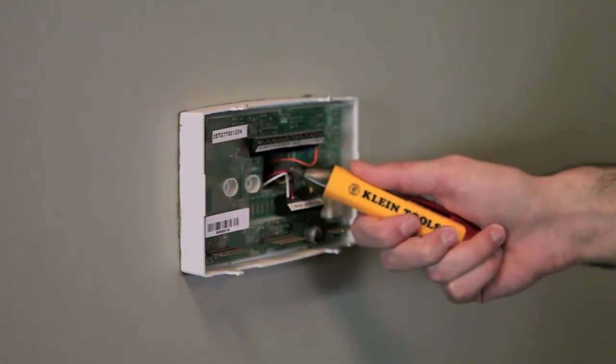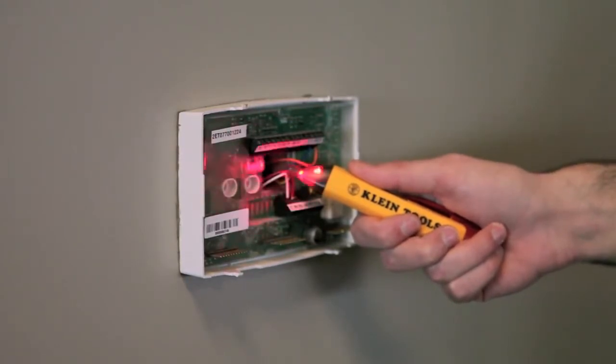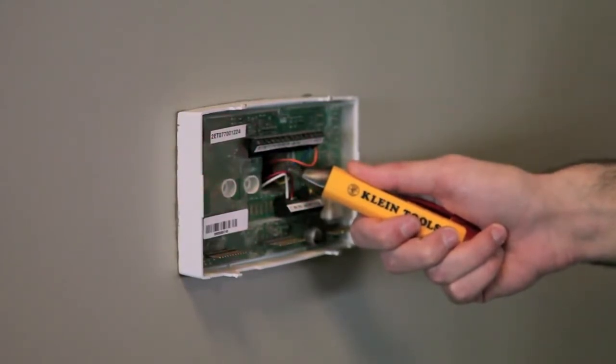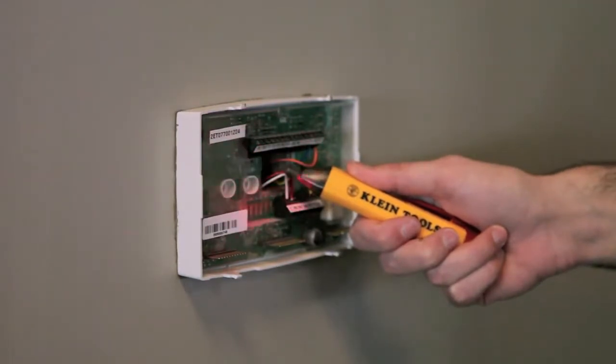The NCVT2 is designed for use with all common low voltage AC sources, such as outdoor lighting, doorbell wiring, and thermostats.